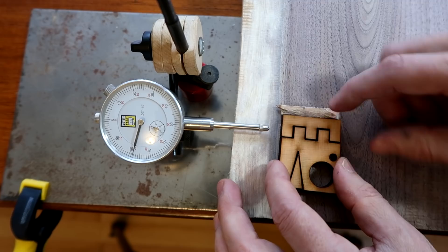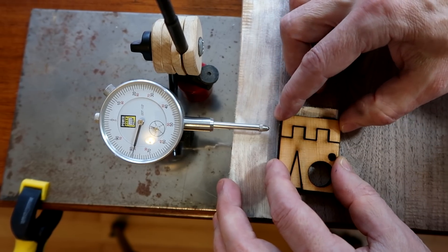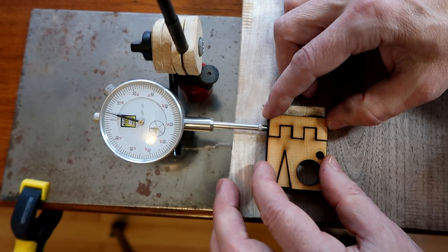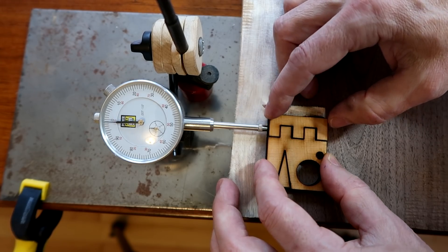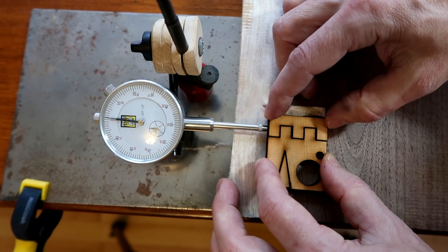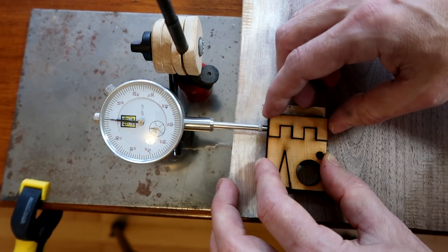I cut this box joint so I could see how much wiggle room I got, to get a sense of how much kerf I've got. So if I put the dial indicator on there and move it back and forth, you can see the needle moves by 20 thou. That's about half a millimeter.